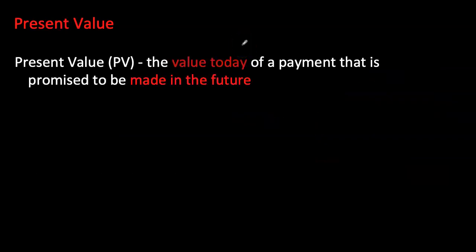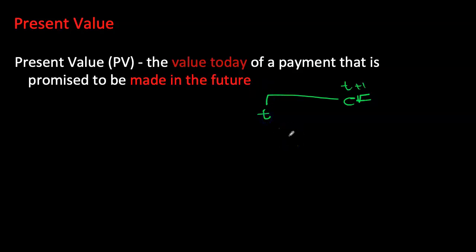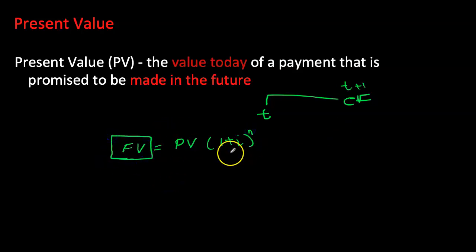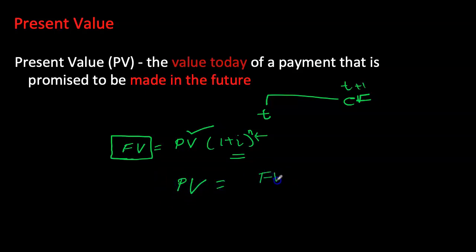Present value is the value today of a payment promised to you in the future. Going back to the future value formula: FV = PV × (1 + i)^n. The face value, interest rate, and number of time periods are all known, so we solve for present value: PV = FV ÷ (1 + i)^n.